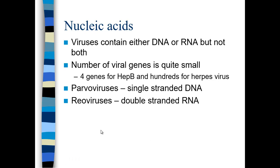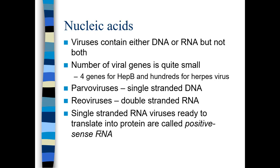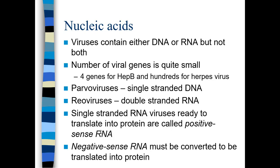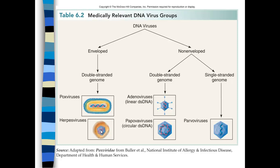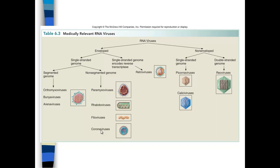Single-stranded DNA viruses are parvoviruses. Reoviruses are double-stranded RNA. Single-stranded RNA viruses that are ready to translate into protein go directly into protein — they're called positive-sense RNA viruses. Negative-sense RNA viruses must form complementary RNA; they must be converted by RNA polymerase before they can be translated into protein. As for DNA viruses, envelope viruses include pox viruses and herpes viruses, and non-enveloped include double-stranded DNA adenoviruses and papova viruses. The single-stranded genome group is called parvoviruses.